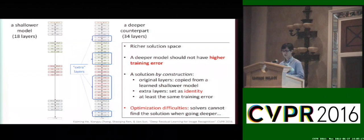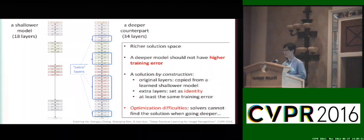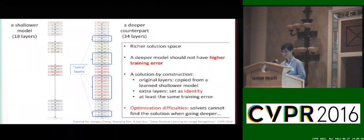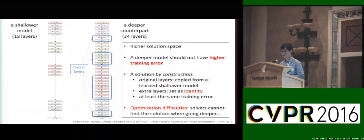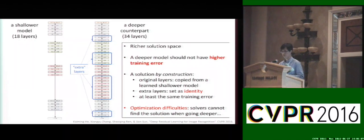We argue that this is a counter-intuitive experimental phenomenon. Consider a shallow 18-layer model and its deeper 34-layer counterpart. The deeper model has a richer solution space and should not have higher training error. By construction, given a trained shallow model we can copy all its layers and set the extra layers unique to the deeper model as identity mappings. This indicates a deeper model should at least match the shallow model's training error. Thus the phenomena suggest optimization difficulties — current solvers like SGD cannot find the solution as the network goes deeper.